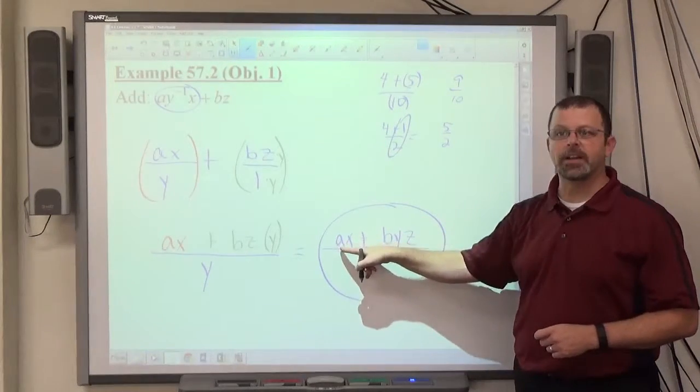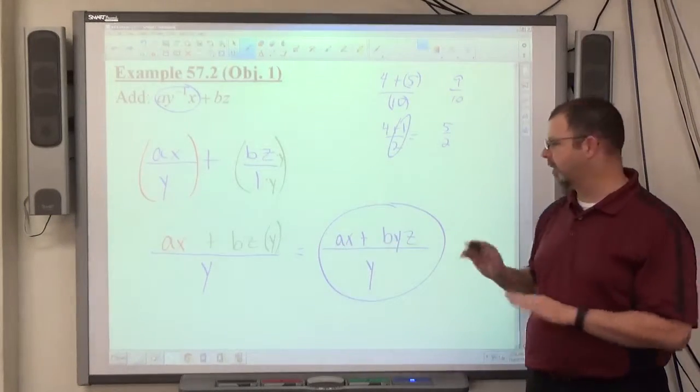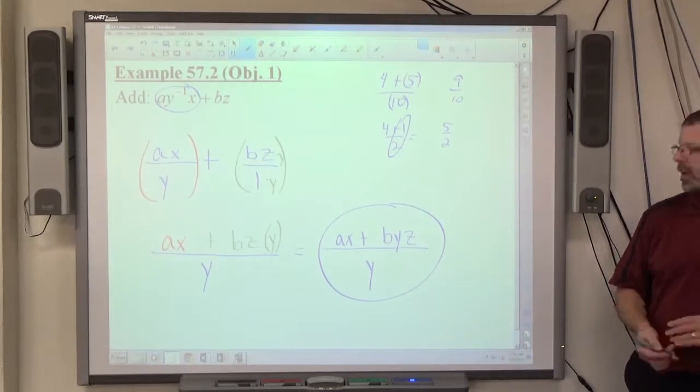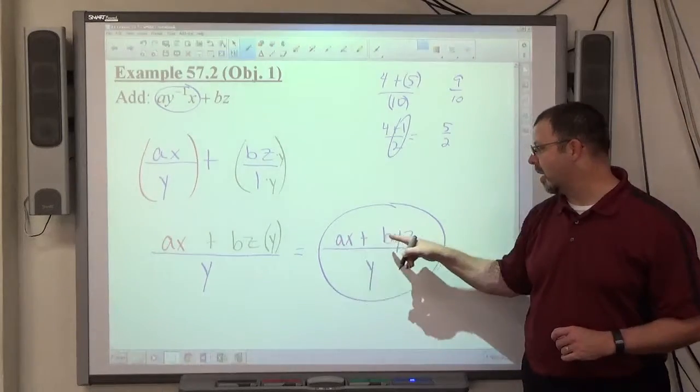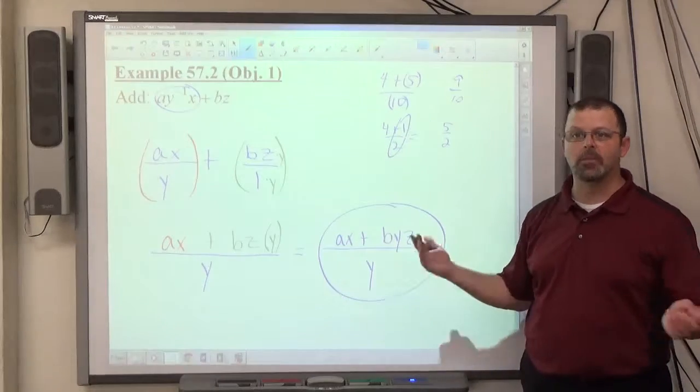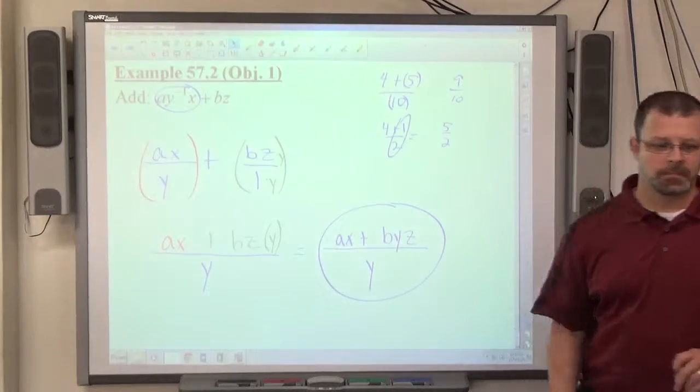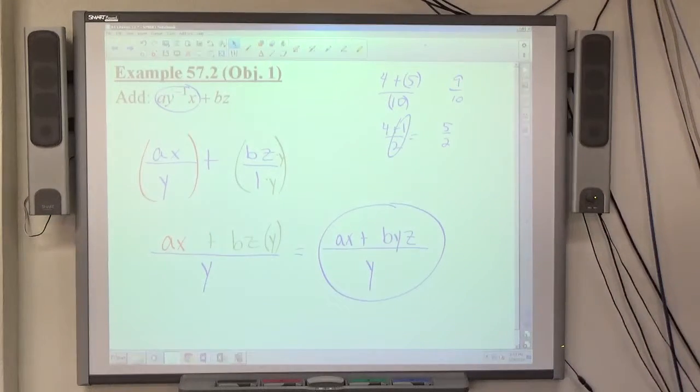So if I try to cancel these Y's without affecting that whatsoever, it's going to be wrong. So again, chances are they're not going to reduce. So just leave it as is. If it happened to be A, X, Y plus B, Y, Z over Y, then of course all the Y's cancel at that point. It doesn't happen very often.